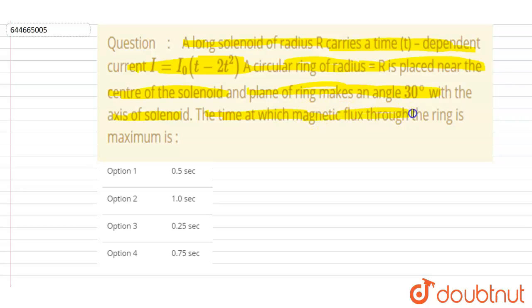The time at which the magnetic flux through the ring is maximum. So if you make a solenoid, let's say this is a solenoid, inside the solenoid the magnetic field direction will be parallel to it like this.